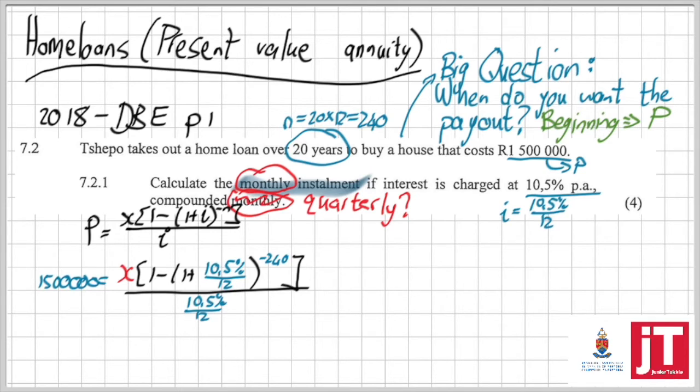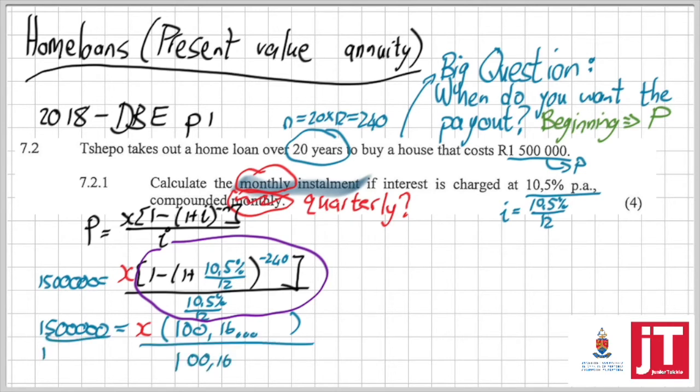For me to now calculate x, your monthly installments, I'm going to calculate that whole back part first. So I am going to calculate 1 minus (1 plus...) and that whole back part. Put it in my calculator and the answer I get is 100.16. Now don't round off at all. Then, after I have calculated that, I'm just going to divide away by that 100.16 that's still in my calculator. And my answer is R14,975.70 per month.